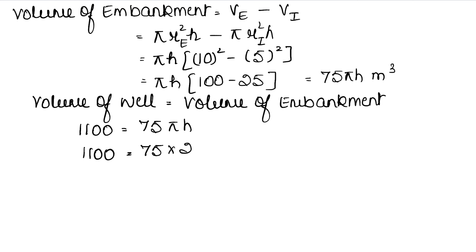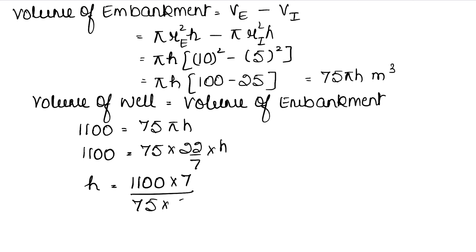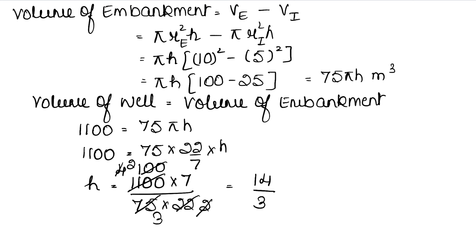So 1100 = 75 × (22/7) × h. Solving: h = (1100 × 7) / (75 × 22), which simplifies to 14/3, giving approximately 4.67 meters.